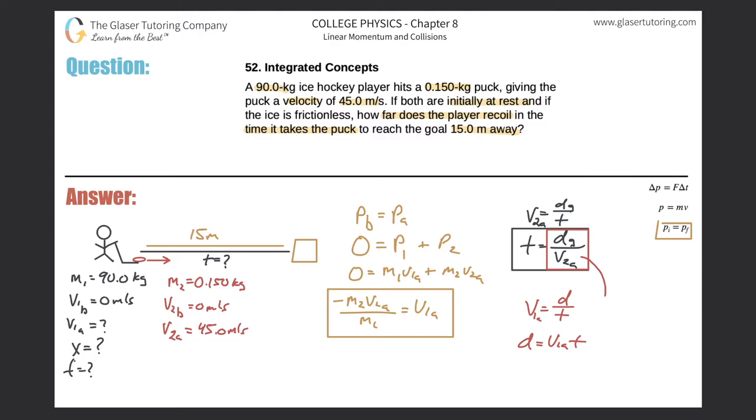What do we realize? That d is essentially equal to v1a multiplied by dg, the distance of the goal, divided by v2a. Now what is v1a? Well, that's what we found over here. So let's plug this in for v1a and then we'll have a complete equation. So the distance is going to be equal to negative m2v2a all over m1 times distance to the goal over v2a.